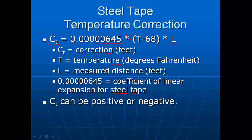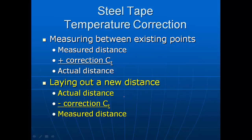If the temperature T is 78 degrees, the parenthetical term (T minus 68) is positive. If T is 58 degrees, the result is negative. Thus the final result C_t can be either positive or negative, and we apply that carefully.